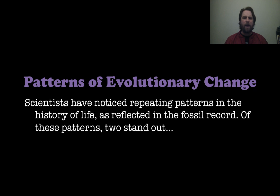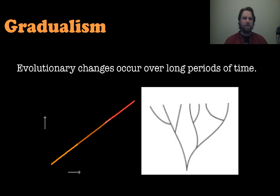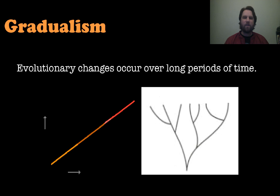When talking about patterns of evolutionary change, scientists have noticed repeating patterns in the history reflected in the fossil record. The first is gradualism — evolutionary changes that occur over really long periods of time, happening little by little. If you think of it in terms of a graph, it's a steady, standard slope: not much going on, but very predictable.